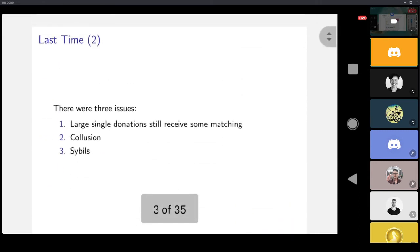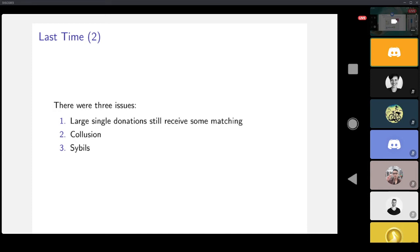We discussed that there were three basic issues you want to address. The first problem is if someone gives a large donation, they still get some funds. The second problem is collusion, where users might work together to optimize. And the third is Sybils creating multiple clones of themselves. The presentation today is about the modifications that get made to address these.